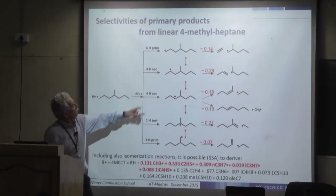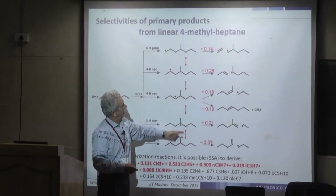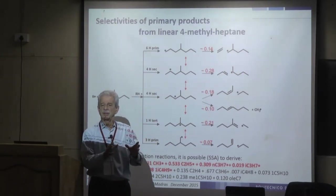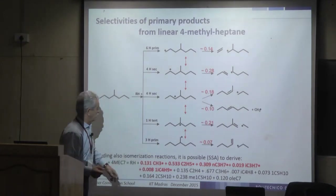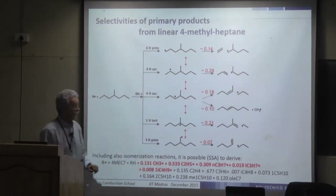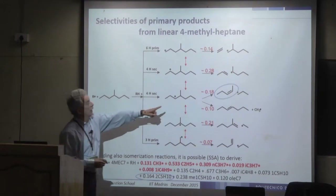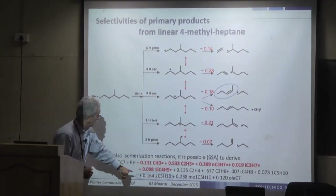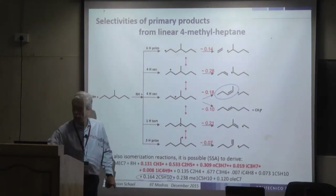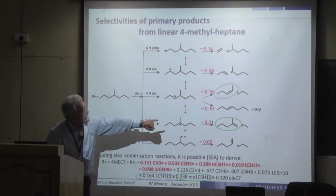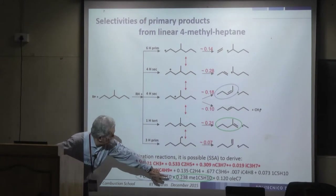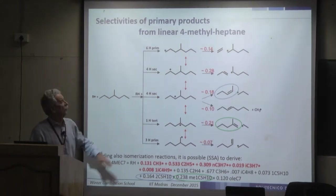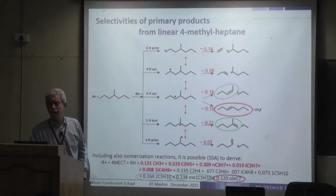We must also account for alkyl radical isomerization — internal H transfer from one position to another. Considering isomerization in addition to direct decomposition modifies the selectivity: for example, one product changes from 18% to 16%, and 2-methylpentene-1 changes from 21% to 24%. Isomerization can be important but does not dramatically alter the selectivity estimated without isomerization.